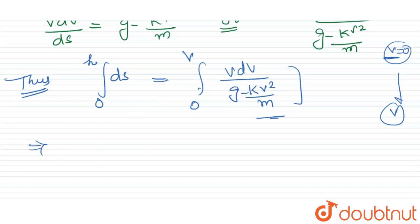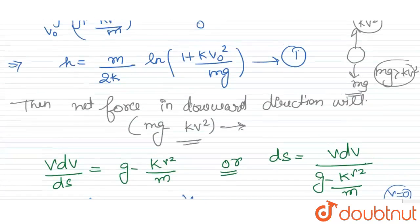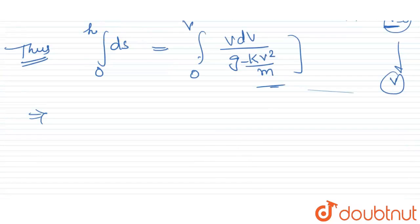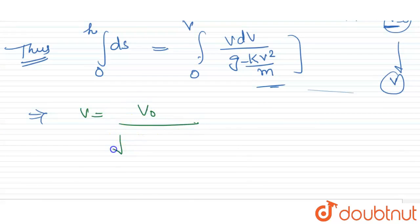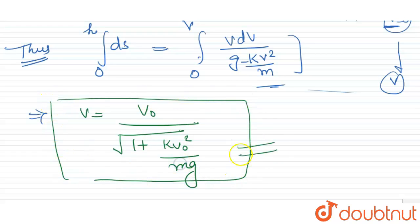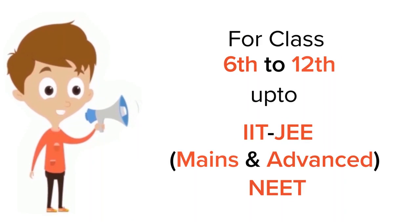Substituting the value of h from equation one and integrating, we get: v equals v naught divided by the square root of (1 plus kv naught square over mg). This is the velocity of the body when it comes downward. Thank you, I hope it's clear.